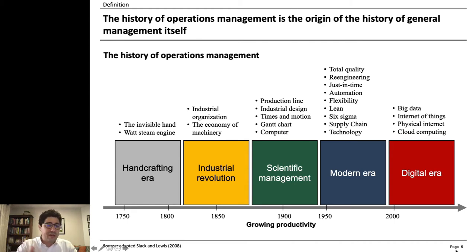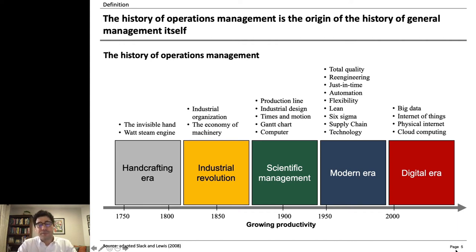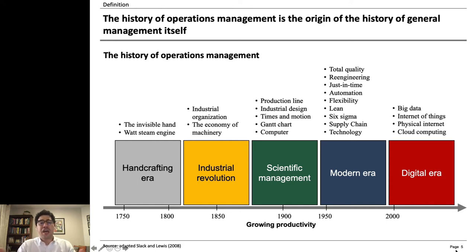We started with the hand-crafting era, with the Watt steam engine. We went to the industrial revolution with the economy of the machinery and the scientific management with Ford's production line, the studies of times and motion, the invention of the computer. It's all related to operations management. In the modern era, we saw the rise of total quality management, re-engineering, just-in-time, Lean Six Sigma, and the advent of supply chain management.